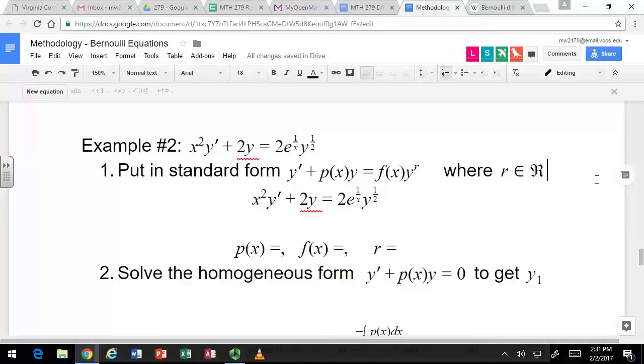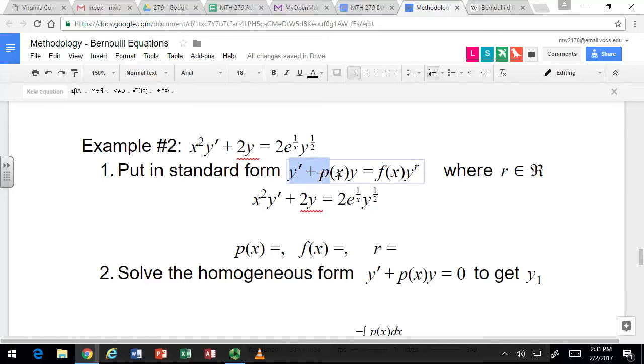In this example we're going to see how to solve a Bernoulli differential equation, which is a first order nonlinear differential equation that's not separable but through a trick can be turned into a separable differential equation. The first step is to put it in its standard form where you just have y prime plus some function of x times y equal to some other function of x times y raised to any real number power. With our example we have x squared times y prime plus 2y equal to 2 times e to the 1 over x times y to the 1/2. It's not in standard form because of the x squared. You don't want anything in front of the y prime, so to put in standard form we're going to divide everything by that x squared.